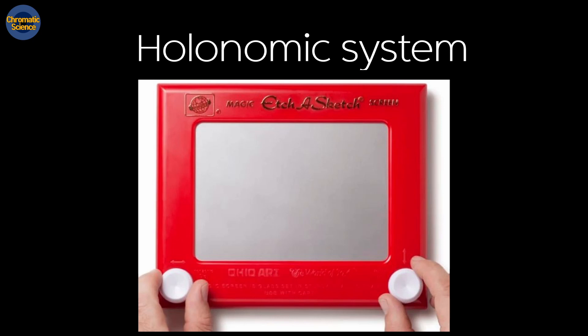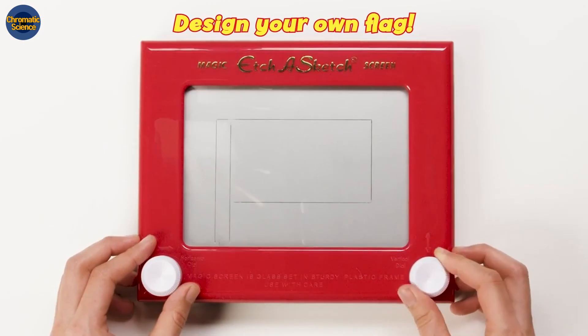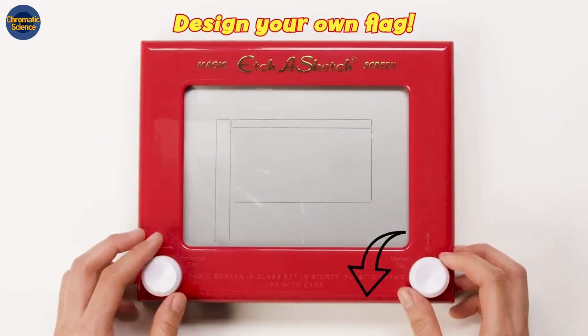On the opposite side of non-holonomic systems, we have holonomic systems. This toy, Etch-a-Sketch, is actually a holonomic system. Using two knobs, you can draw something.